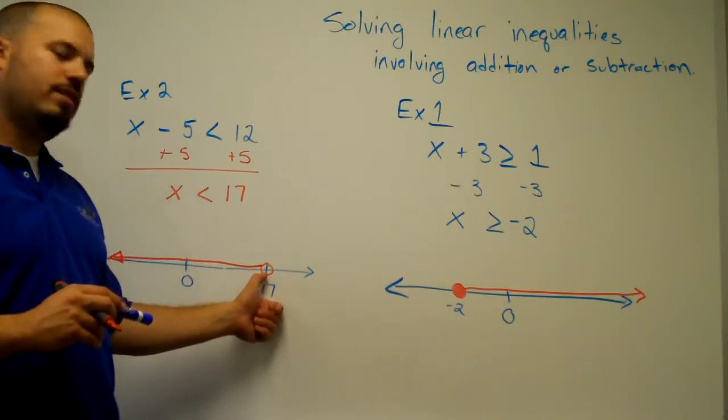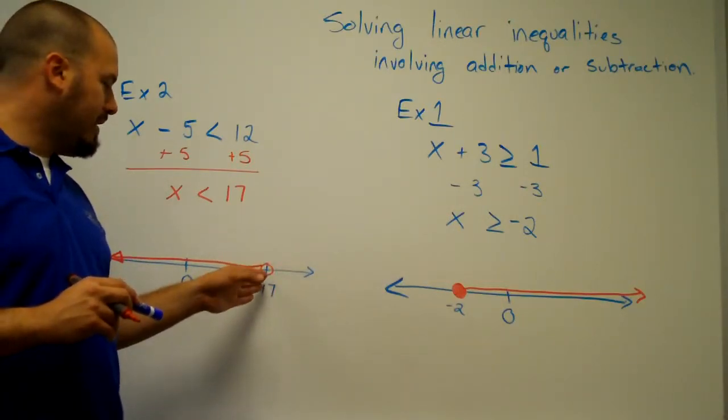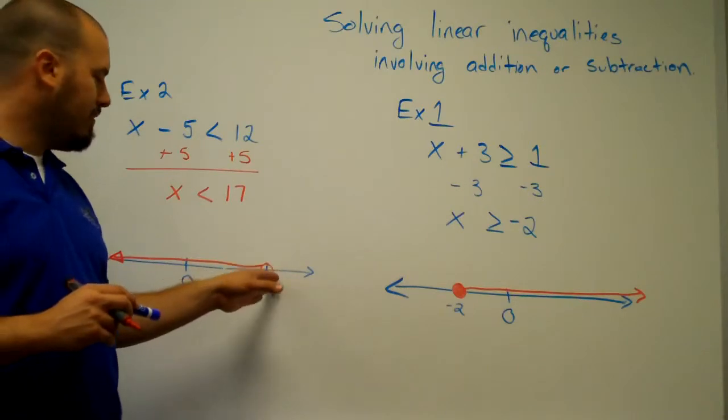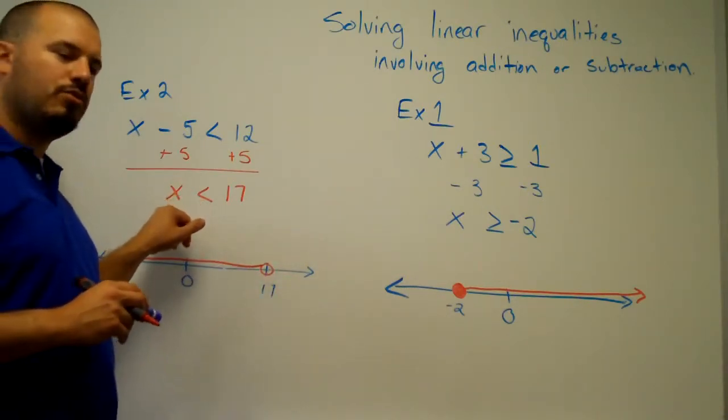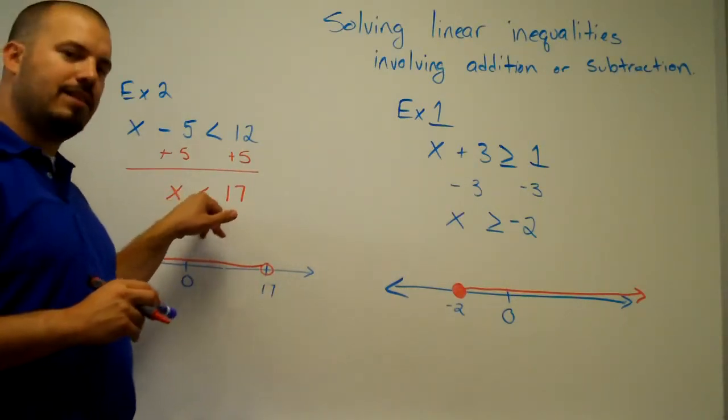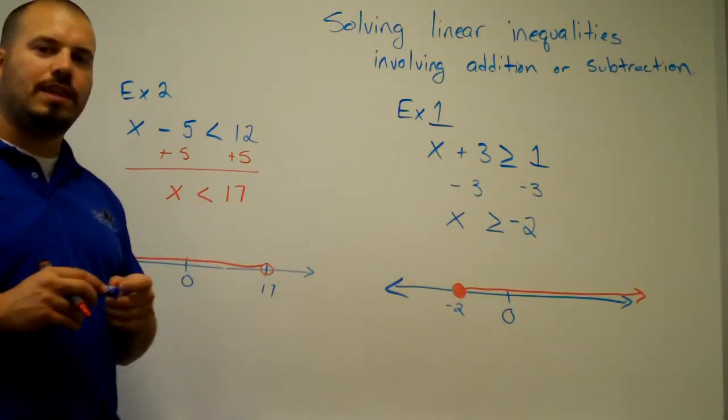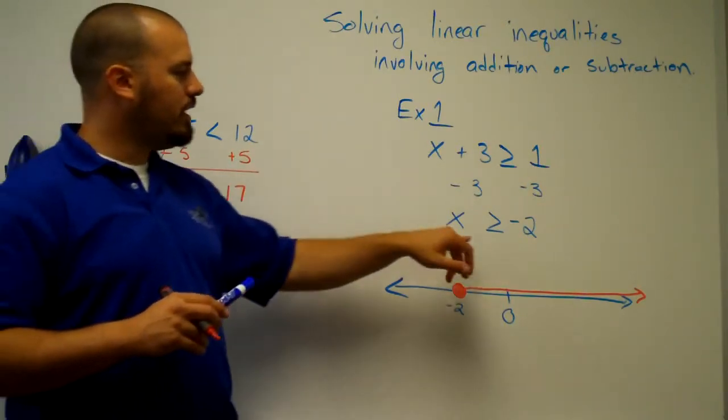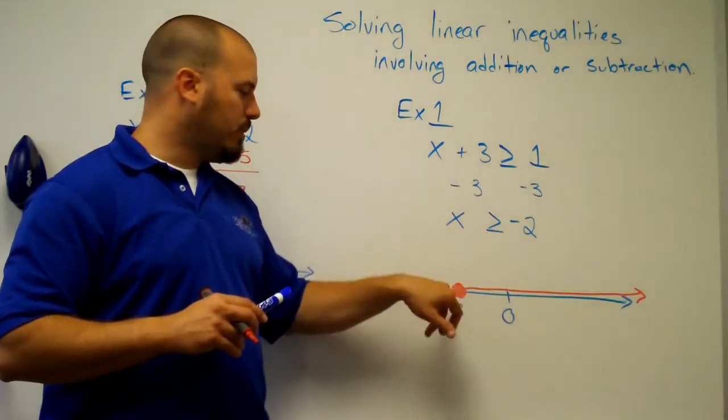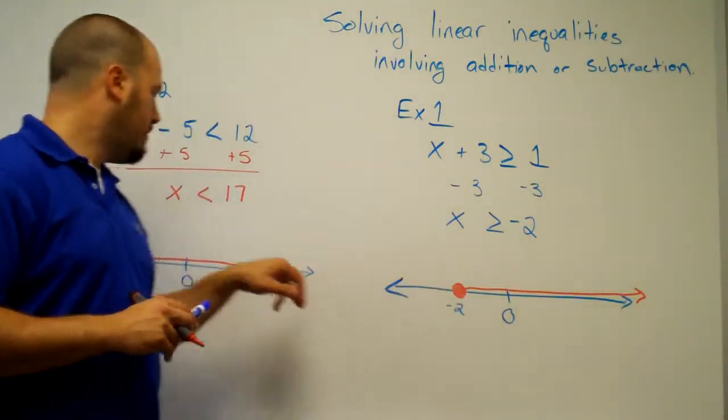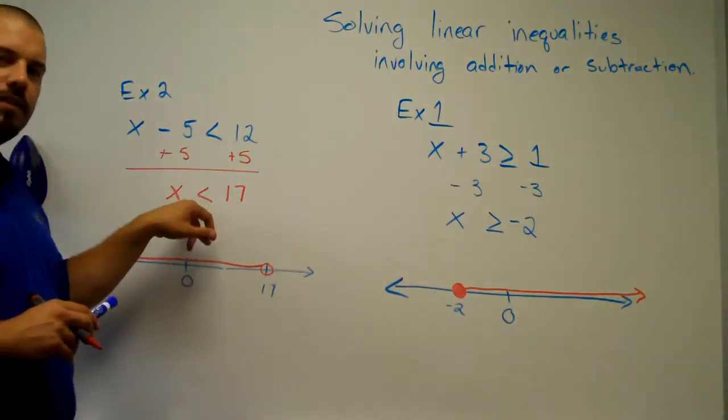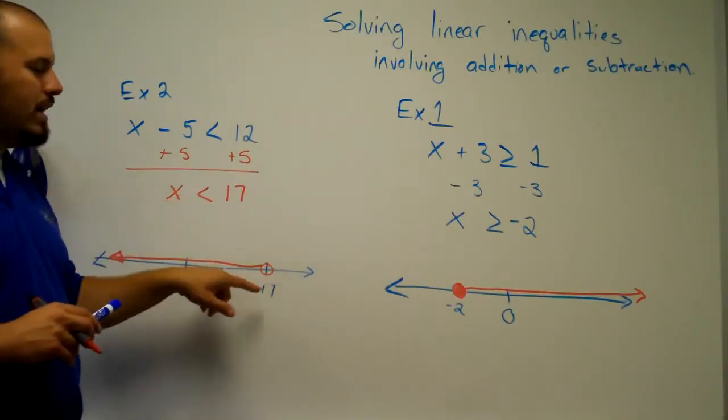Now, I'm leaving it open to indicate that this is not a part of the solution. 17 does not make this true. 17 is not less than 17, so we are not going to shade that in. All right, so, when you see the equal to, you're going to remember to shade the circle. When you do not have the equal to, it's just a less than or a greater than, you do not shade.